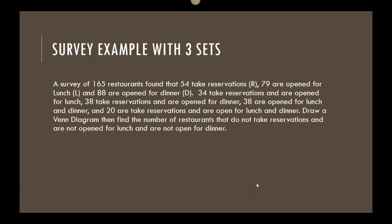All right. So now that we have some kind of feel for how we're supposed to kind of work inside out, let's try an example. So let's say we had a survey of 165 restaurants found that 54 take reservations, and we're going to call reservations R. 79 are open for lunch. Let's call that L. And 88 are open for dinner. Let's call that D. So we have reservations, lunch, and dinner. Those are our subsets. 34 take reservations and are open for lunch. 38 take reservations and are open for dinner. 38 are open for lunch and dinner. And 20 take reservations and are open for lunch and dinner.